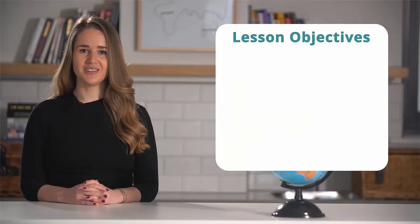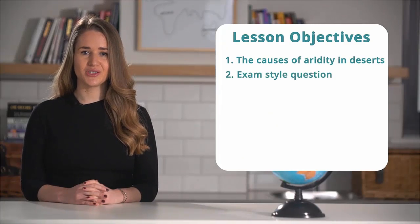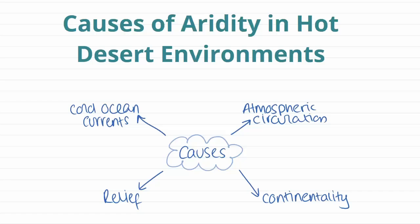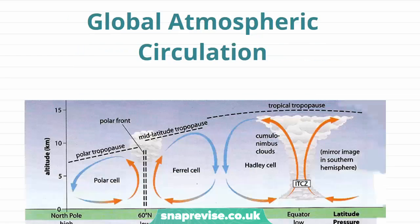Hi guys, in this video we will be understanding the causes of aridity in hot desert environments and answering an exam style question. We're going to be looking at the four main types of causes of aridity: the first being atmospheric circulation, then continentality, then relief, and cold ocean currents, and we're going to look at these four in greater detail.